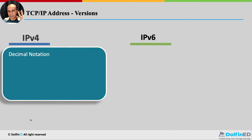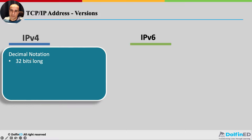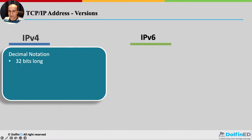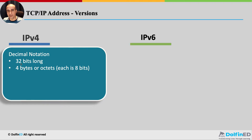There are two major types of IP addresses: IPv4 and IPv6. IPv4 is what we mostly use on the internet today and has been in use for about 30 to 40 years. It's in decimal notation, it's 32 bits long. A bit is a binary digit — a one or a zero. A string of eight bits is an octet or byte, so an IPv4 address is four octets or 32 bits long.